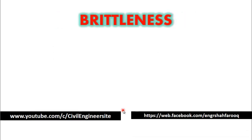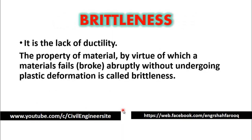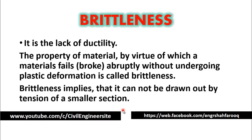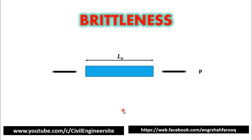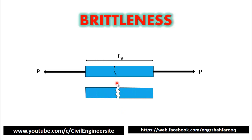Now we will discuss brittleness. Brittleness is the lack of ductility. It is the property of material by virtue of which a material fails or breaks abruptly without undergoing plastic deformation. Brittleness implies that it cannot be drawn out by tension to a smaller section. In the animated example, if we apply a tensile force P on a material of length L0, instead of elongation it breaks into two pieces — brittleness is failure without plastic deformation.